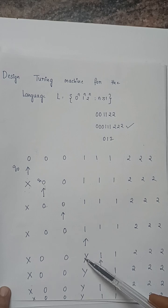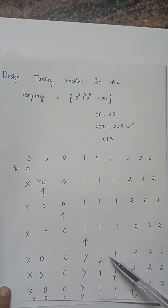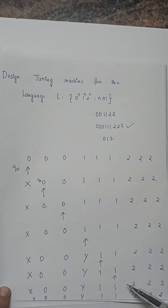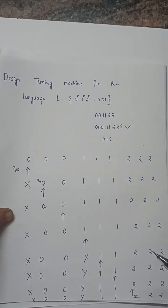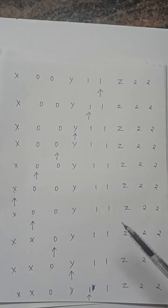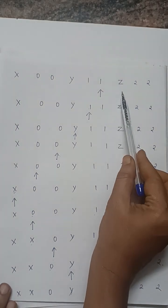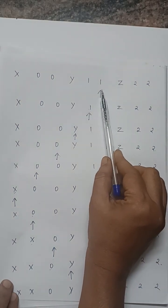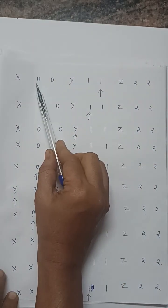After replacing the first one with y, the machine needs to find the first two. So it reads ones and writes ones while moving right, until it reaches a two, which is replaced with z. This completes the matching of the first zero, first one, and first two.